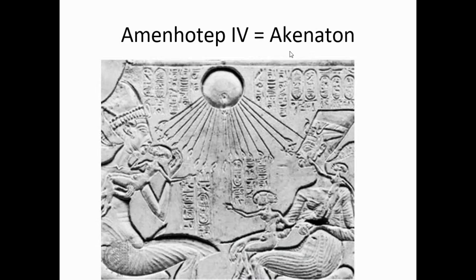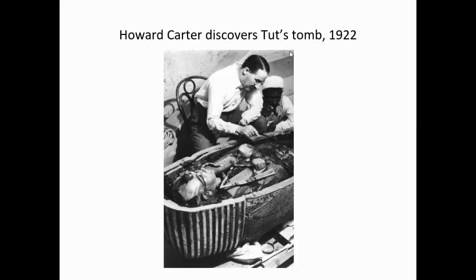This slide covers the pharaoh Amenhotep IV, who changed his name and all of Egyptian religion to Akhenaten, instituting exclusive worship of the sun. He is the predecessor of probably the most famous pharaoh in pop culture, King Tut or Tutankhamun, whose tomb was discovered in 1922 by Howard Carter — one of the great archaeological finds in all of history.